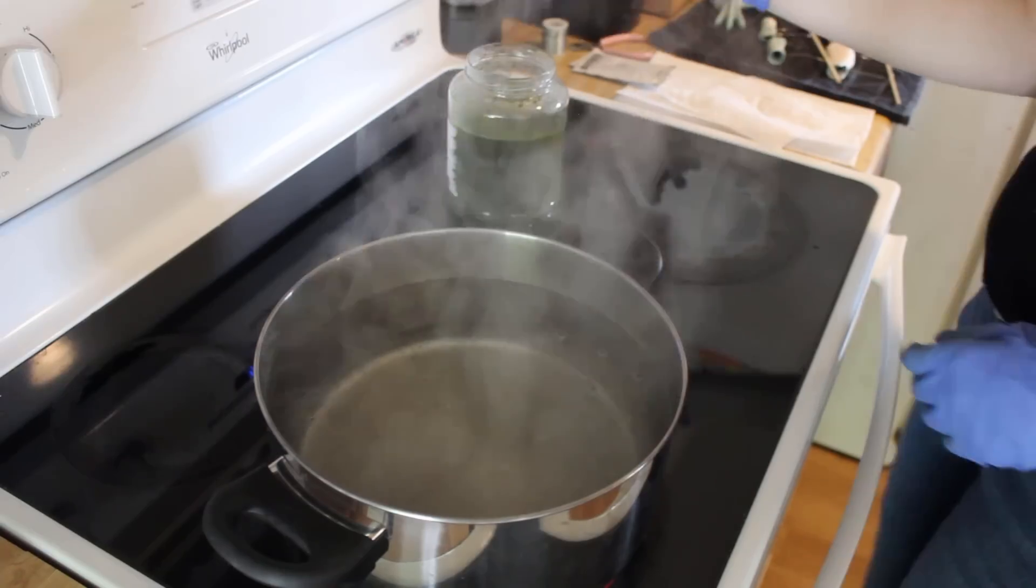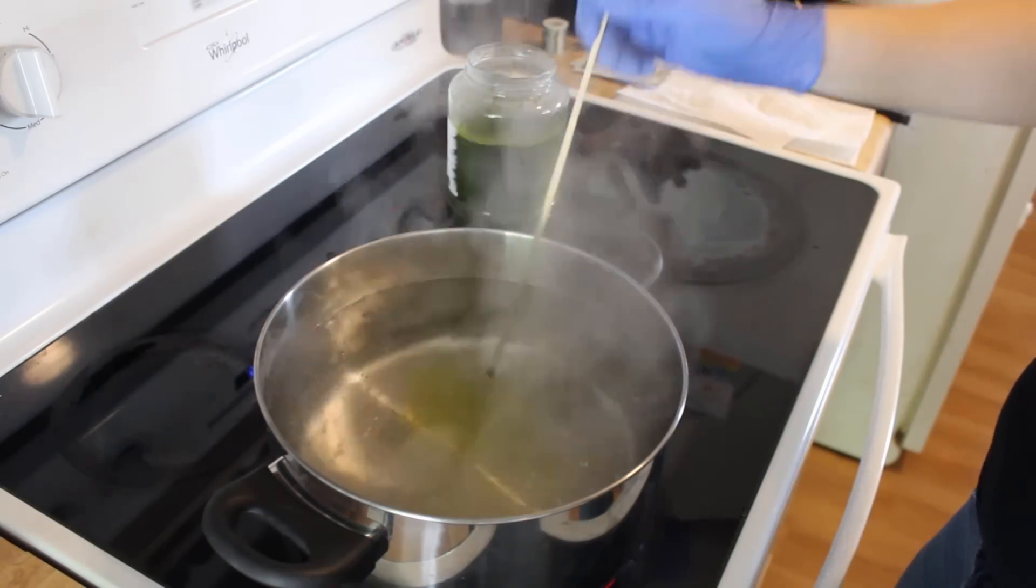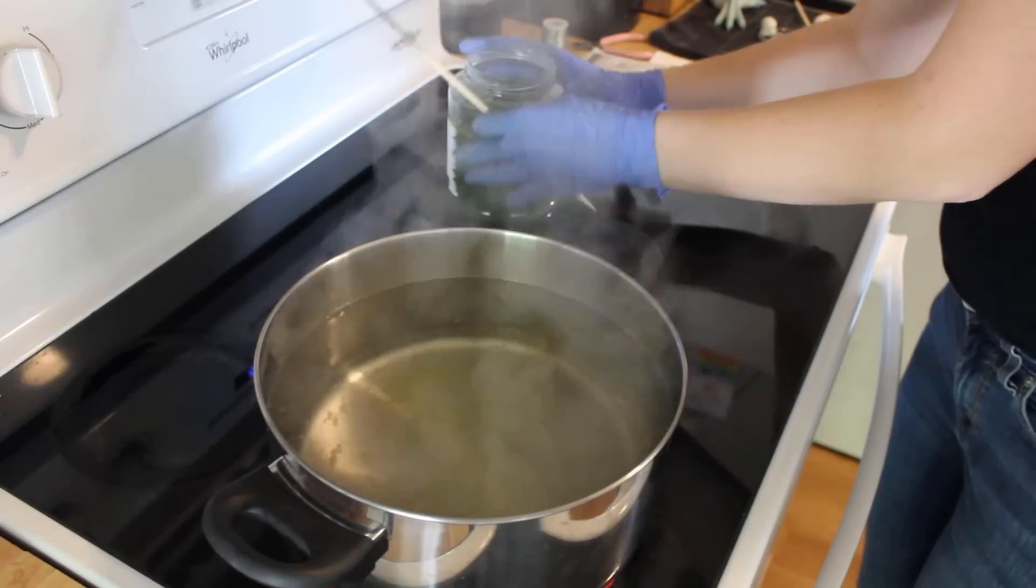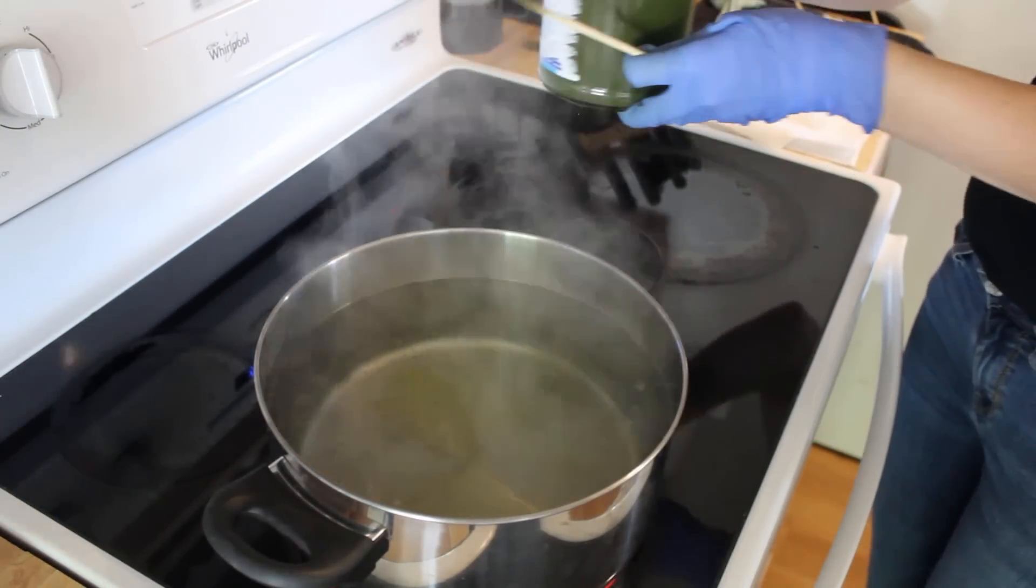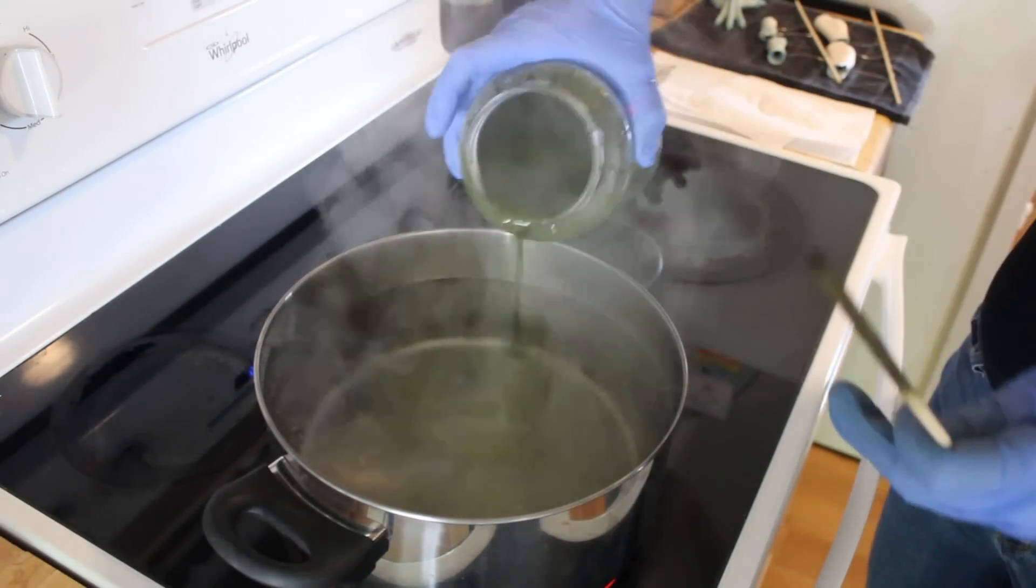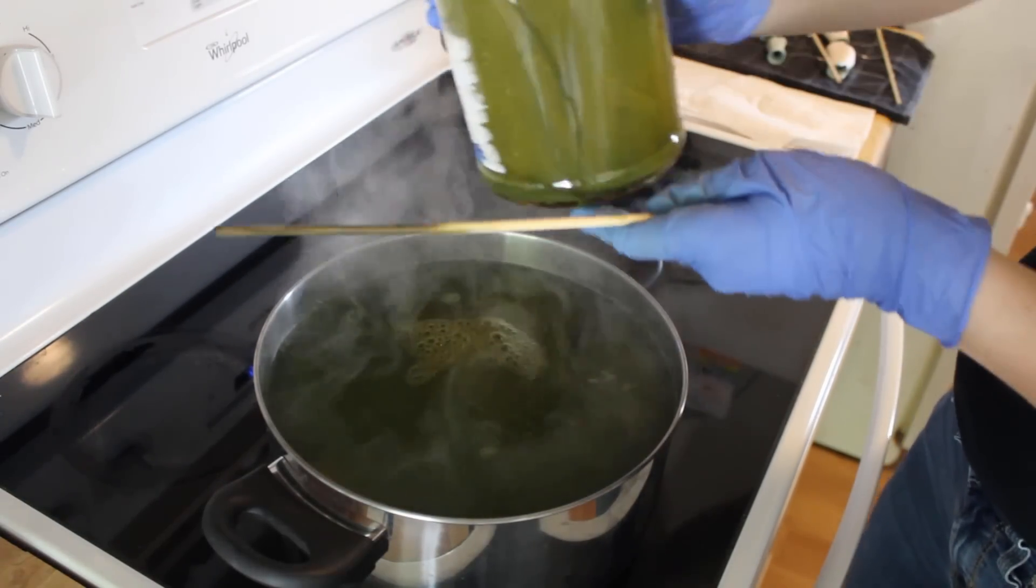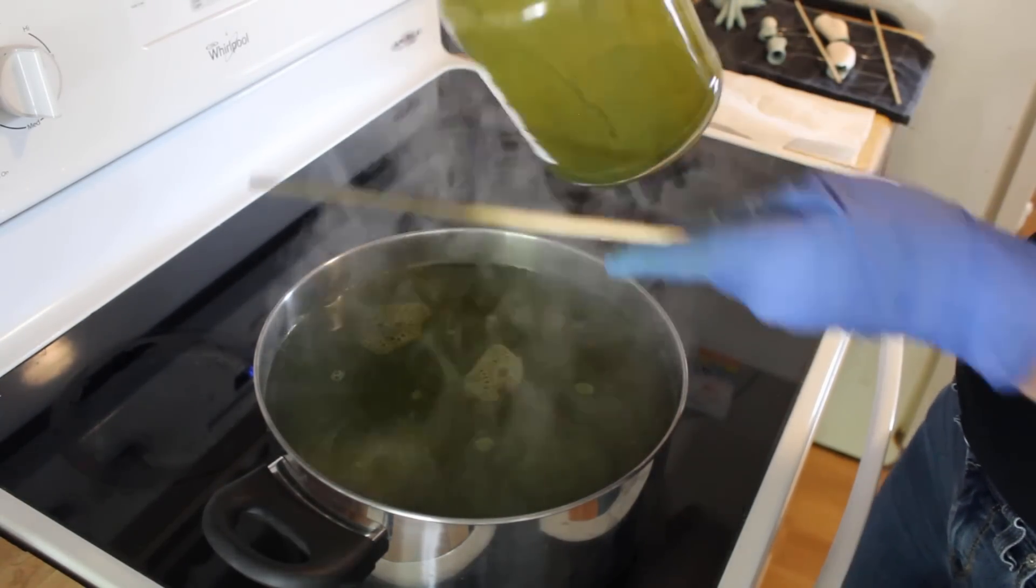The dye mix I have is the ugliest muddy green, and I actually really love it. I hope the parts turn this color, it has a lot of personality, and it's different from what I usually see. I want these parts to be intense. So I dump the entire jar of dye concentrate into the pot. I'll mix it with a bamboo skewer.